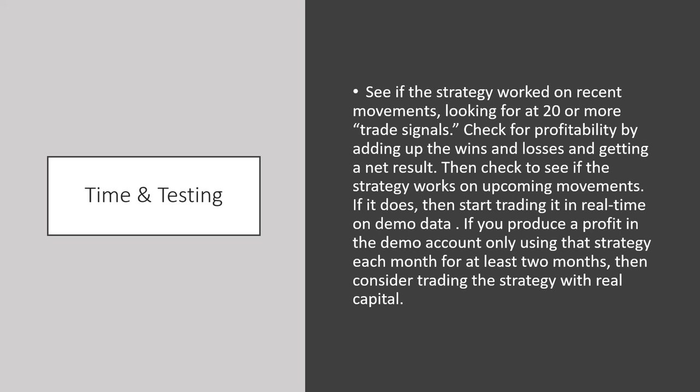The first thing we want to do, once we've put the strategy together, is check it against 20 or more buy signals and 20 or more sell signals to see if this filtration system or strategy works — and would it have netted us a profit? Then we want to check the strategy against upcoming movements, but only testing. If it works, maybe we start trading it in real time on a demo account. If we produce a profit in a demo account using only that strategy each month for at least two months, then maybe we'd consider that strategy with real money.